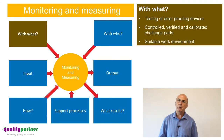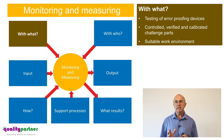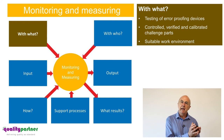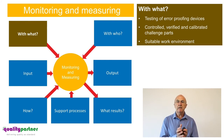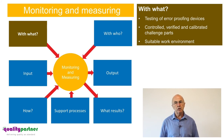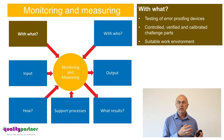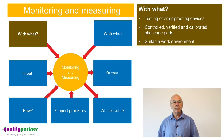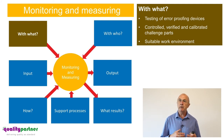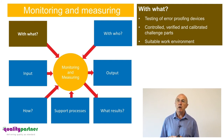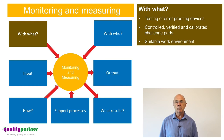Now let's look at the 'with what' part of the turtle diagram for monitoring and measuring. The first thing is testing of error proofing devices. If we've built measuring devices into the system for error proofing, we need to make sure they're working effectively. That means having controlled, verified, and calibrated challenge parts to test that the error proofing devices are working. If we're doing daily verification, we need results available to support that and effective maintenance of the calibration masters used to test the error proofing devices.